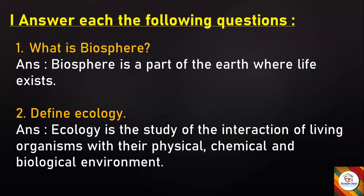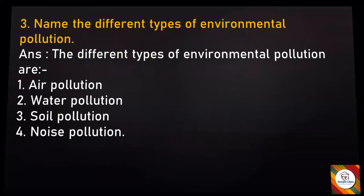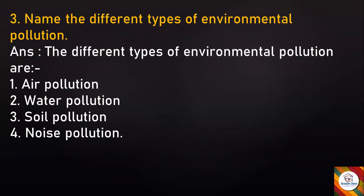Second: Define Ecology. Ecology is the study of the interaction of living organisms with their physical, chemical and biological environment. Next: Name the different types of environmental pollution. Answer: The different types of environmental pollution are air pollution, water pollution, soil pollution and noise pollution.